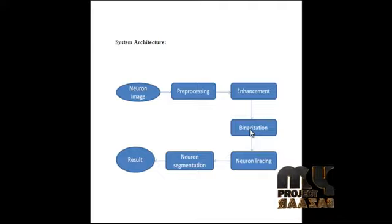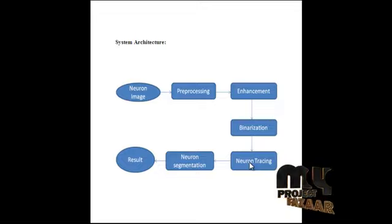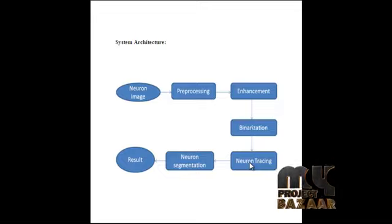In its simple form, Gaussian-based vessel enhancement may be viewed as a filter that enhances vessel-like structures. The binary image is then passed to the neuron tracing stage, where we trace the neuron in the input image using the alpha-beta graph learning algorithm. This is a search algorithm that seeks to decrease the number of nodes evaluated by the minimax algorithm in its search tree. It stops evaluating a move when at least one possibility proves it is worse than a previously examined move.